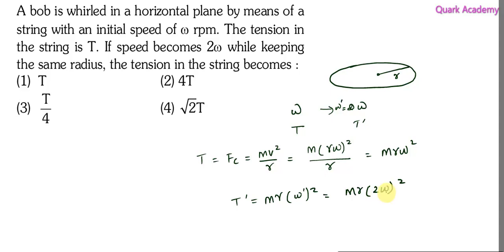You have to be careful now, this will become 4 m r omega squared. m r omega squared is tension, so this is 4 times the initial tension. So the tension in this string will become 4T, 4 times the initial tension.